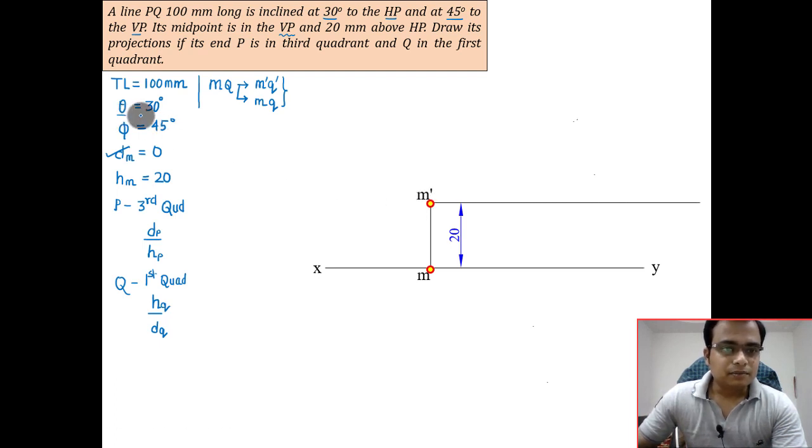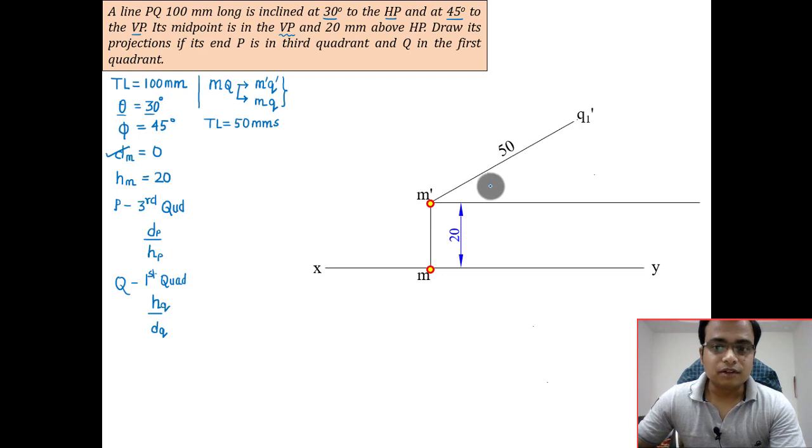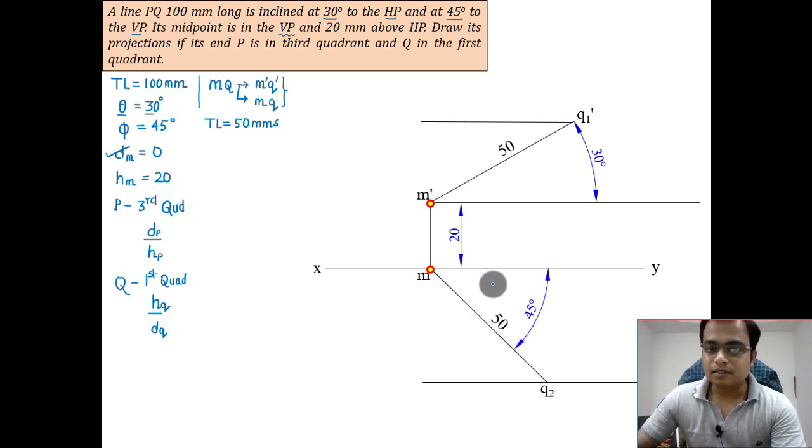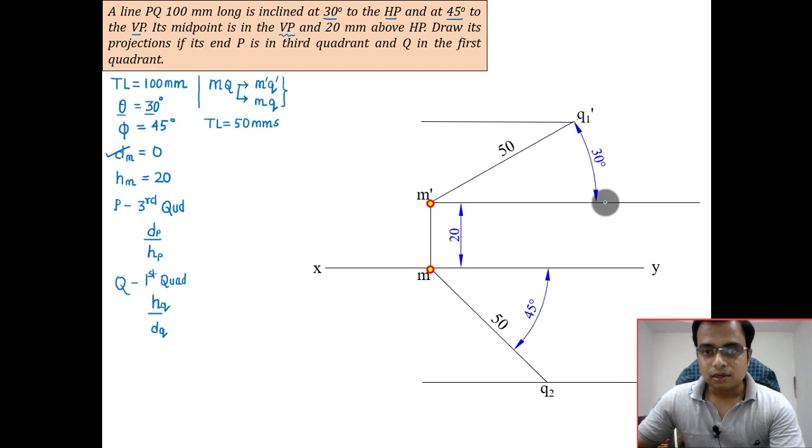Let me put up this theta. Right now I'm following the half line approach, so the true length for me is going to be 50 millimeters at an angle of 30 degrees or theta. Similarly, this is 50 millimeters at an angle of phi, that is 45 degrees. Let us have the locus lines now.